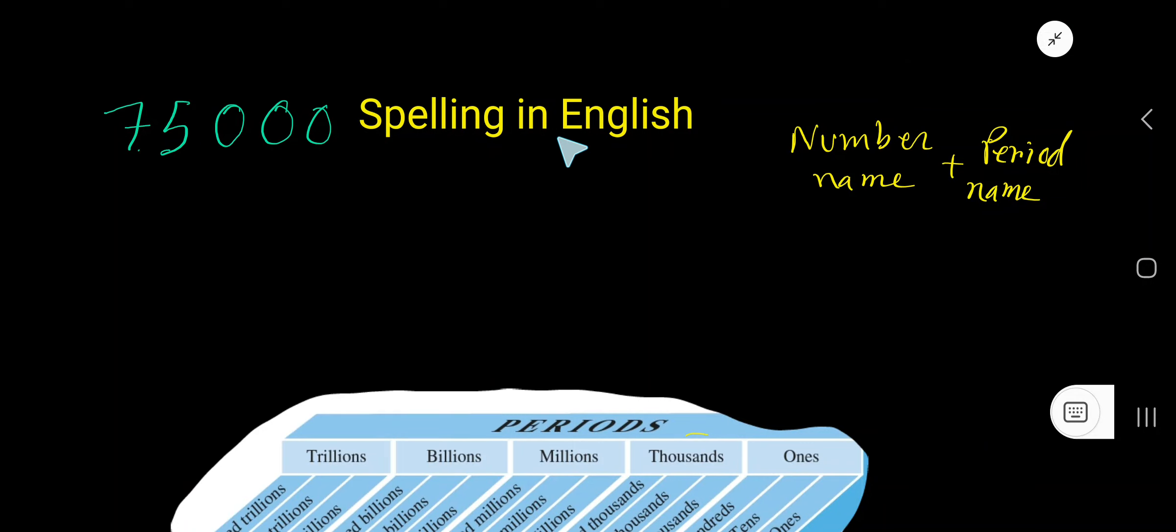75000 spelling in English. To spell this number, we'll follow this rule: number name plus period name. So let us rewrite this problem. Three digits makes a group which is called a period. The name of the first period